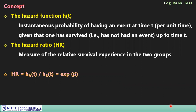Before using the method, let's understand the hazard function — the instantaneous probability of having an event at time t per unit time, given that one has survived up to that point. The hazard function is associated with each survival curve at each time interval, similar to what we saw in Kaplan-Meier analysis.